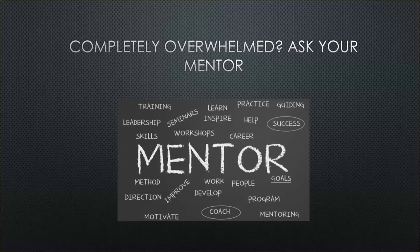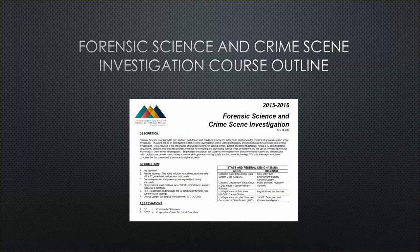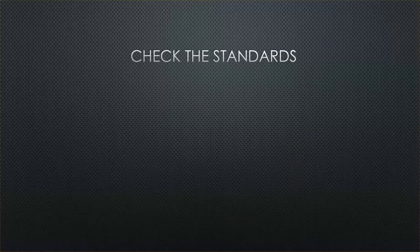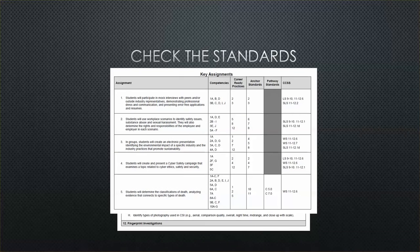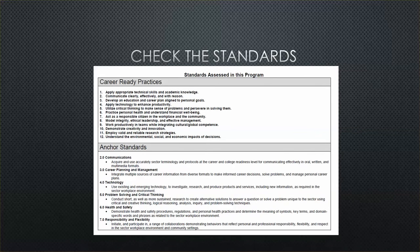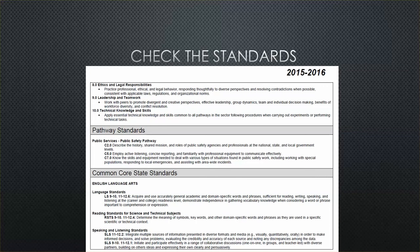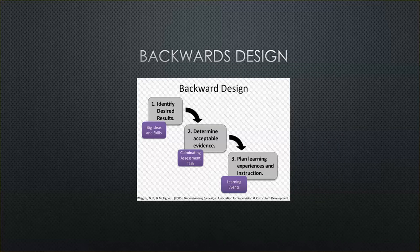Luckily, Barb had a mentor who set her on the right path to quality curriculum design. To get a bird's-eye view of the forensic science course, Barb's mentor had her download a copy of the forensic science and crime scene investigation outline from her district's website. By reading the document, Barb was able to see what students expected from the course based on the overview, some activities they would expect to participate in, skills they would learn, and state standards that applied. She was feeling a little better about what she would need to teach and what wasn't actually part of her class.